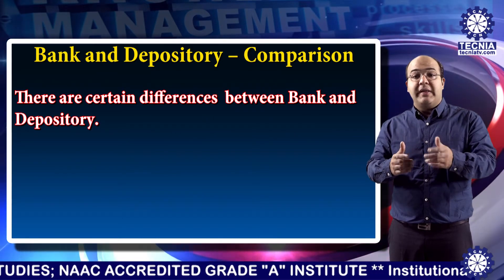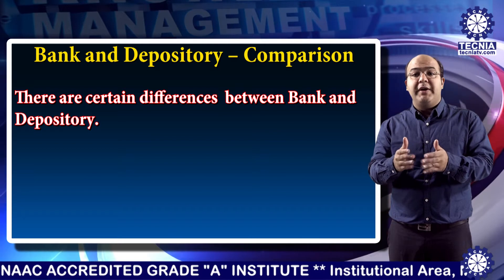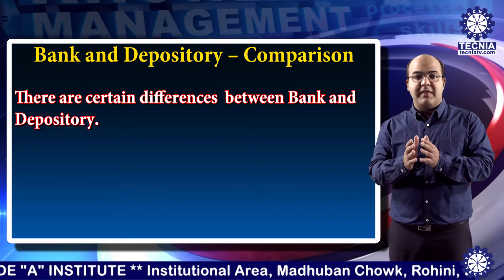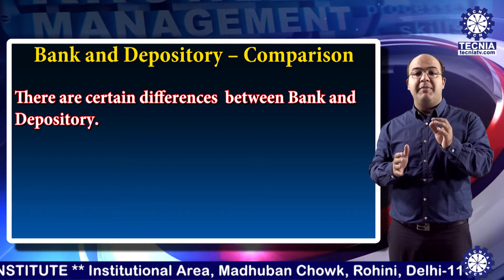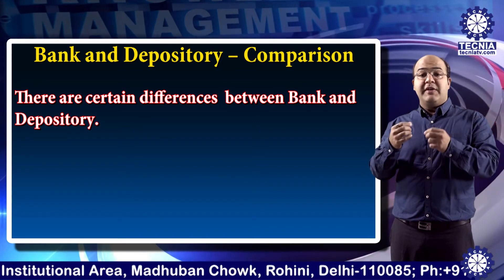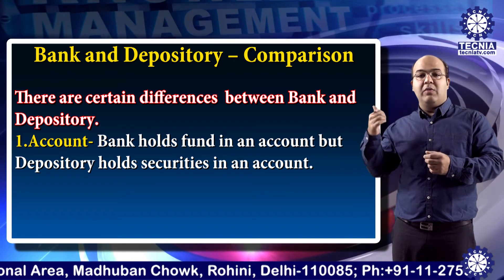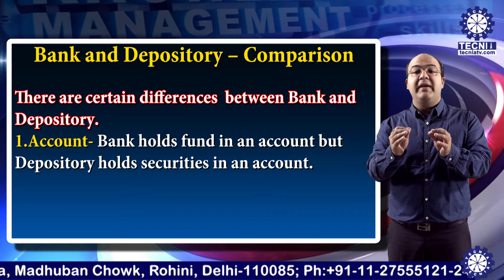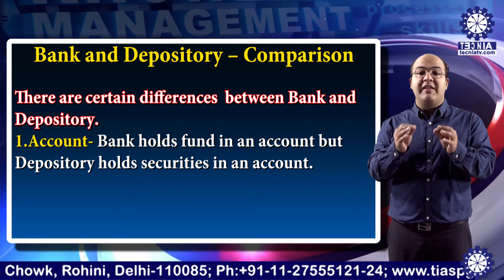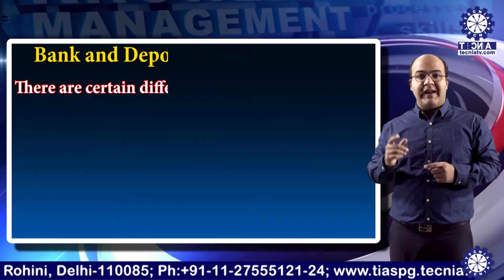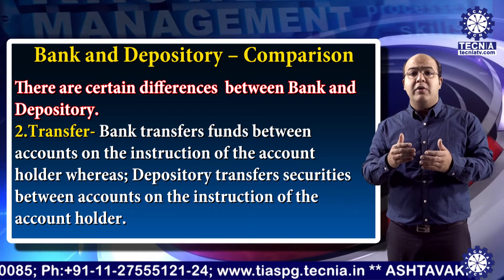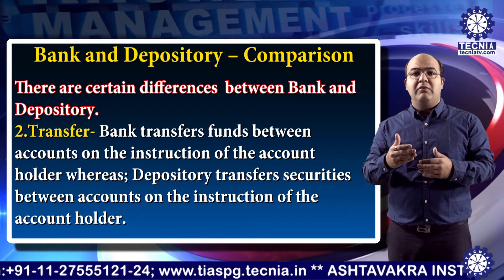Now we will discuss the difference between bank and depository. A depository can be compared to a bank, but both operate for different purposes. First, based on account: a bank holds funds in an account, but a depository holds securities in an account. Second, based on transfer: a bank transfers funds between accounts on the instruction of the account holder, whereas a depository transfers securities between accounts on the instruction of the account holder.